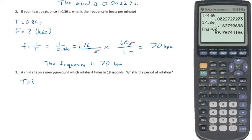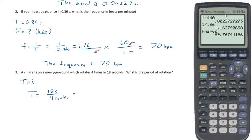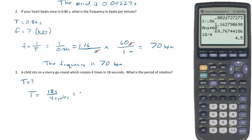So again, the easiest way to do this is just to think about our literal definition of period. Period was seconds per cycle. So we know that it does this in 18 seconds, and it does four cycles. So 18 seconds per four cycles will give us 18 divided by 4, or 4.5 seconds per cycle.